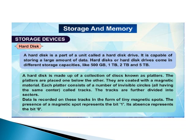A hard disk is part of a unit called the hard disk drive and is capable of storing large amounts of data. Hard disk drives come in different storage capacities like 500 GB, 1 TB, 2 TB, and 5 TB. A hard disk is made up of a collection of disks known as platters, placed one below another and coated with magnetic material. Each platter consists of a number of invisible circles called tracks, which are further divided into sectors. Data is recorded on these tracks in the form of tiny magnetic spots — the presence of a magnetic spot represents bit 1 and its absence represents bit 0.